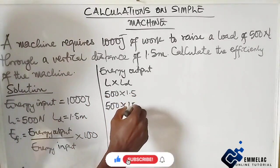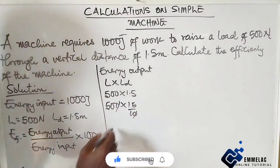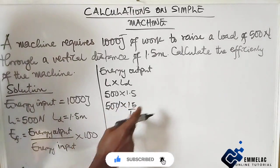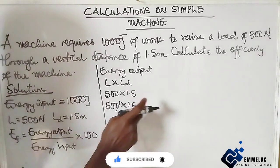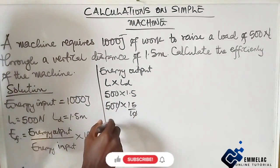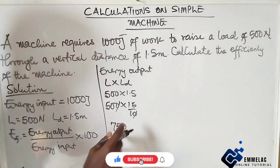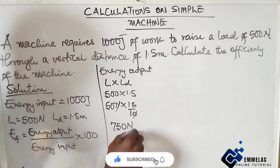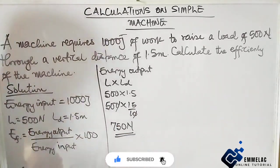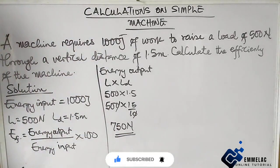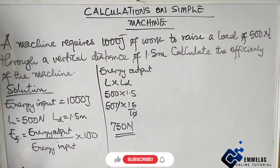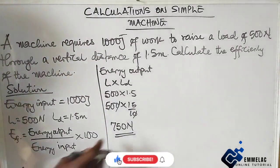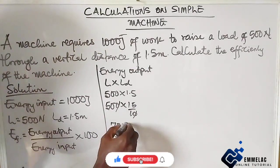This gives us 500 times 1.5. Converting to fraction and calculating: 5 times 15 gives us 75, then including this zero gives us 750. The energy output is 750 joules.